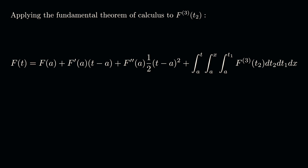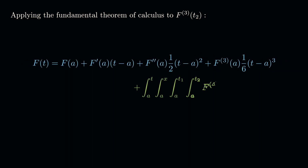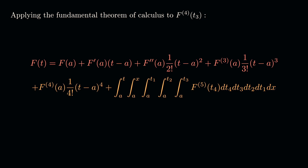Applying the fundamental theorem of calculus to f''' at t₂ gives an additional term with the third derivative of f at a, times one-sixth (t minus a) cubed. Continuing, applying FTC to the fourth derivative at t₃ gives a term with f''''(a) times one over four-factorial times (t minus a) to the fourth, plus an increasingly nested integral expression — again, all from the fundamental theorem of calculus.